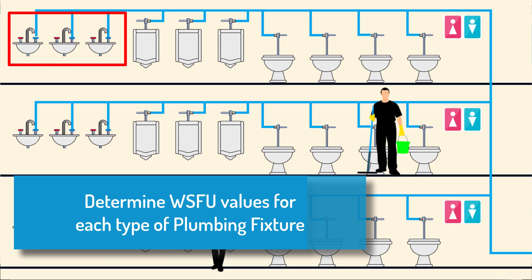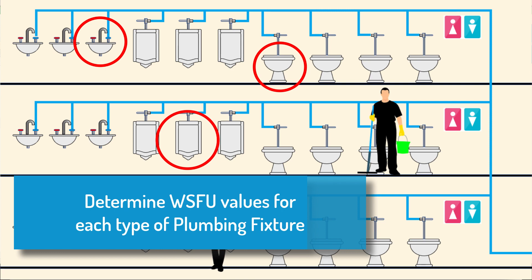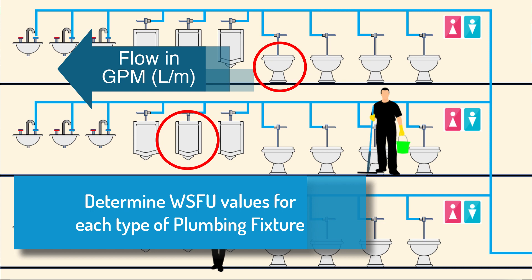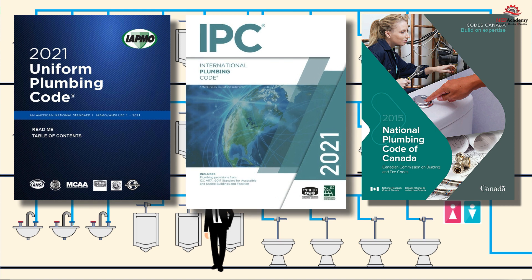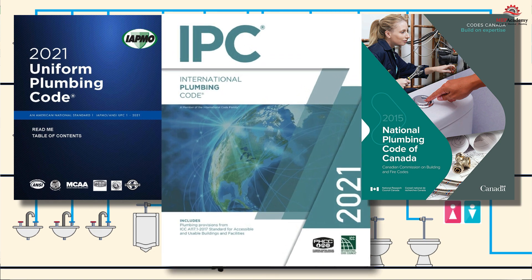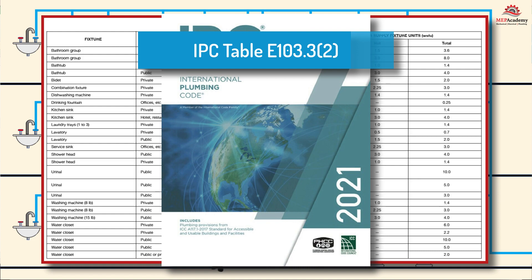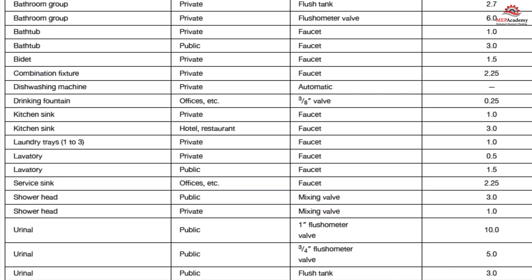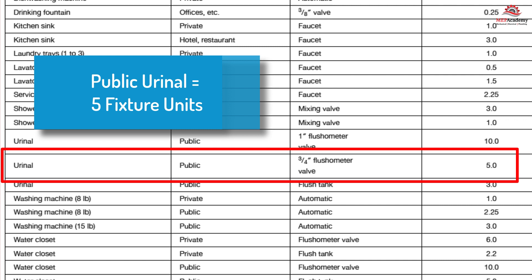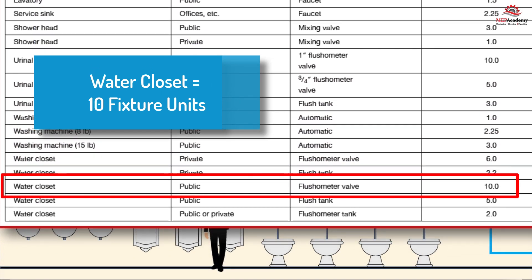Determine the water supply fixture unit value of each type of fixture. Water supply fixture units, or WSFU, is a measure of the flow rate of water through a specific fixture. The WSFU of a fixture can be found in the plumbing code or by consulting a plumbing engineer. Here we show several different codes and the various tables they use for fixture unit values. We use the 2021 International Plumbing Code Table E103.3.2, which shows that a public lavatory has 1.5 fixture units, a public urinal with a three-quarter inch flushometer valve has 5 fixture units, and a water closet with a flushometer valve has 10 fixture units.